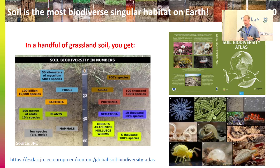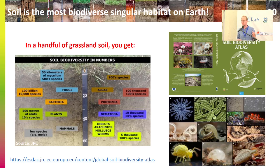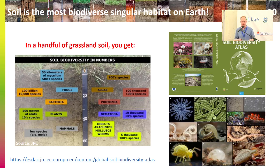Just to continue on the biodiversity aspect: if you take just one handful of grassland soil, this is what you get — 50 kilometers of mycelium, 100 billion bacteria from 10,000 species, 500 meters of plant roots, and also protozoa, 100,000 species of nematodes, algae, et cetera. So it's an absolutely huge biodiversity.